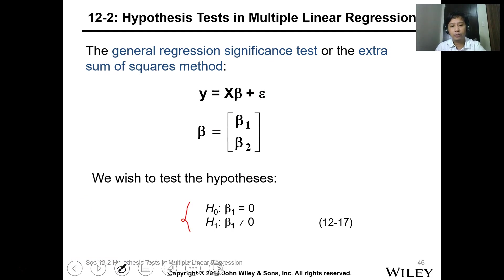The null hypothesis is equal to zero, meaning there's no linear regression, while H1, which is β1 is not equal to zero, means there's a regression or linear regression effect of x1.